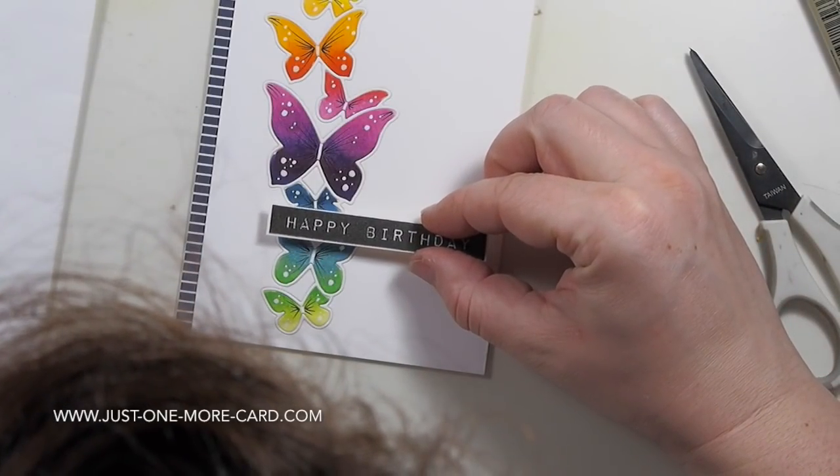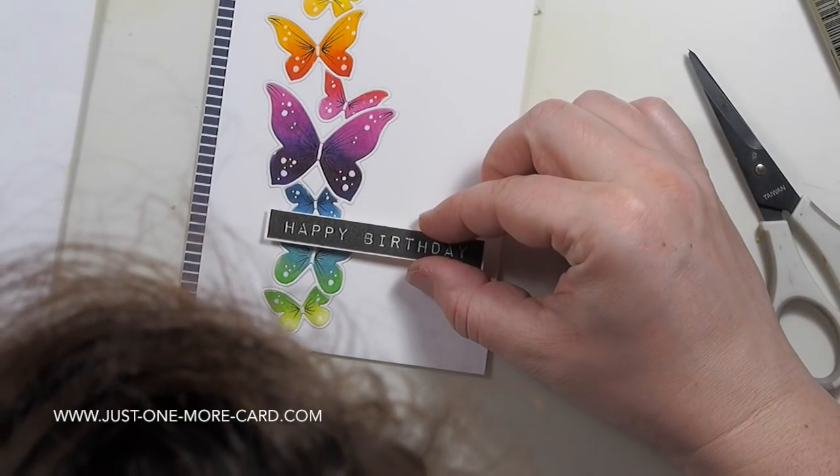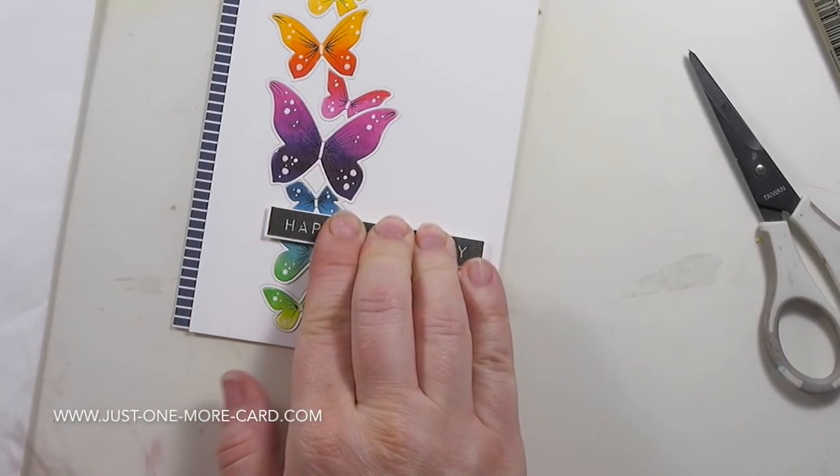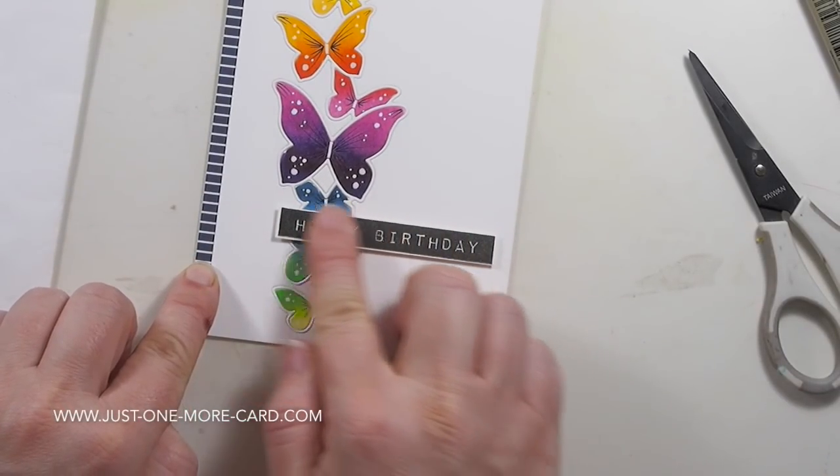And here we have the sentiment that has completely dried by now. I added some foam adhesive behind it and now I can adhere it to my card and it's not going to smoosh when I'm going over this.